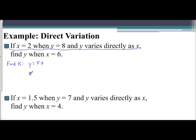So 8 equals k times 2, which is 2k. And when you solve for k, you get k equals 4 by dividing both sides by 2.